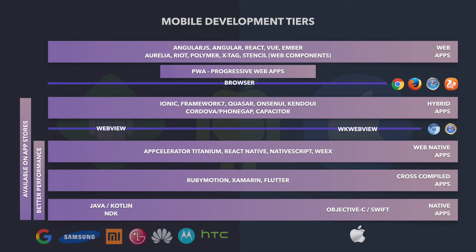Everything below the browser is created to target app stores. What I mean is not necessarily the app store itself — you can install from other locations or download from the internet. But if you're below the browser tier, you are creating an app that your users have to install onto their devices. I was considering everything below the browser as mobile apps — everything you can install and leverage native components or native APIs.